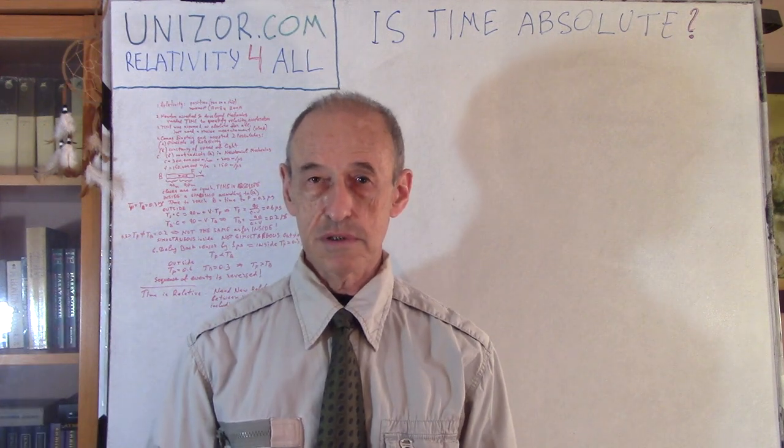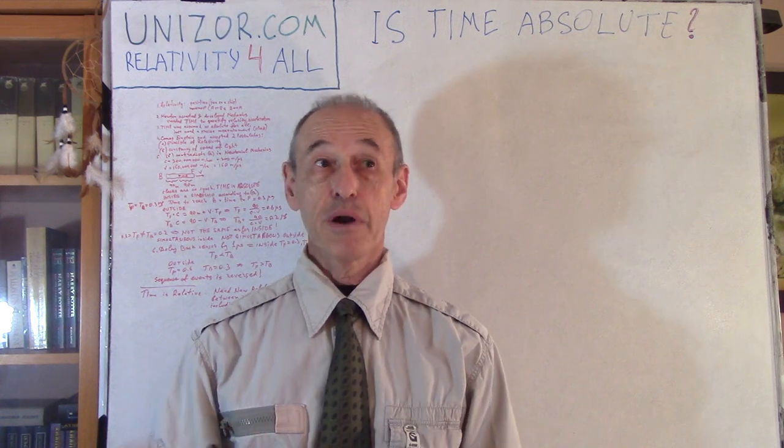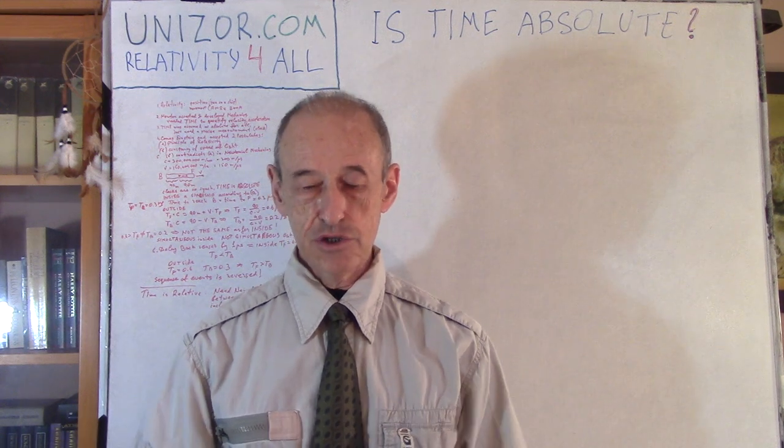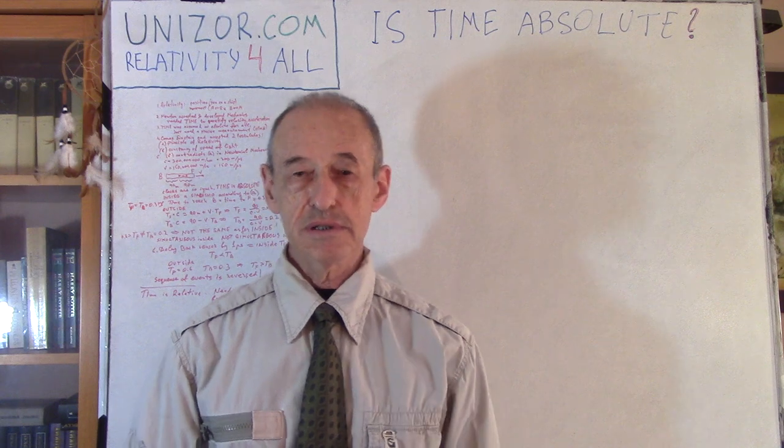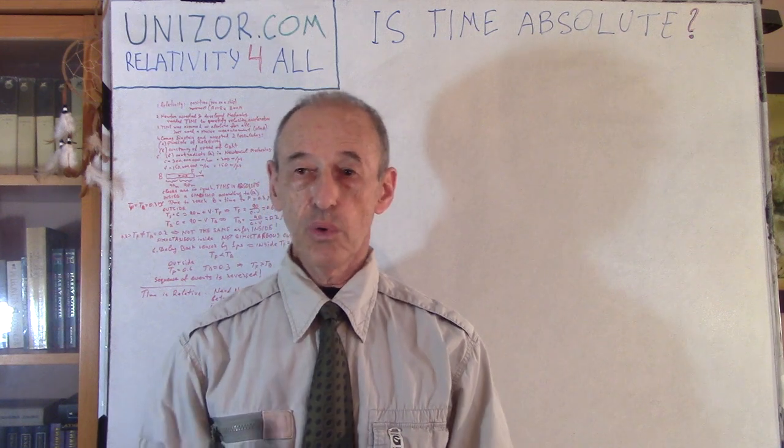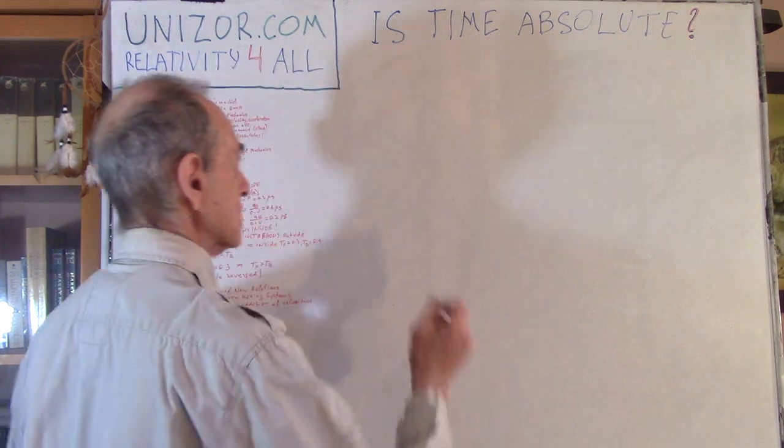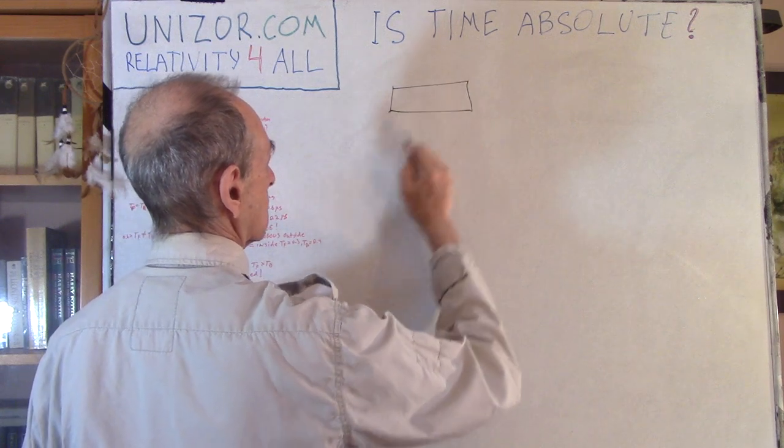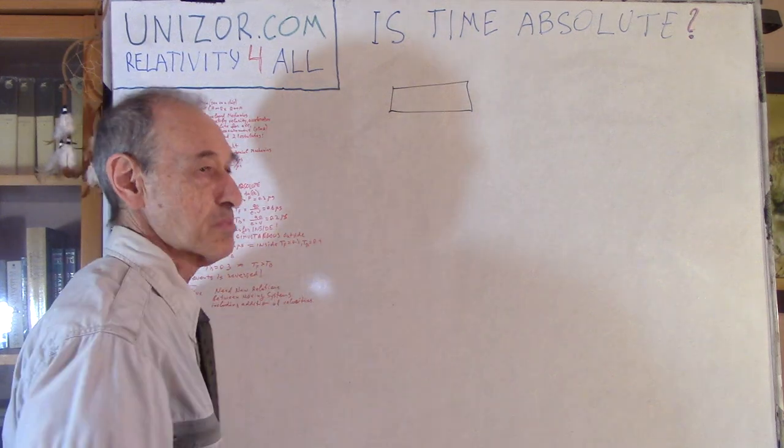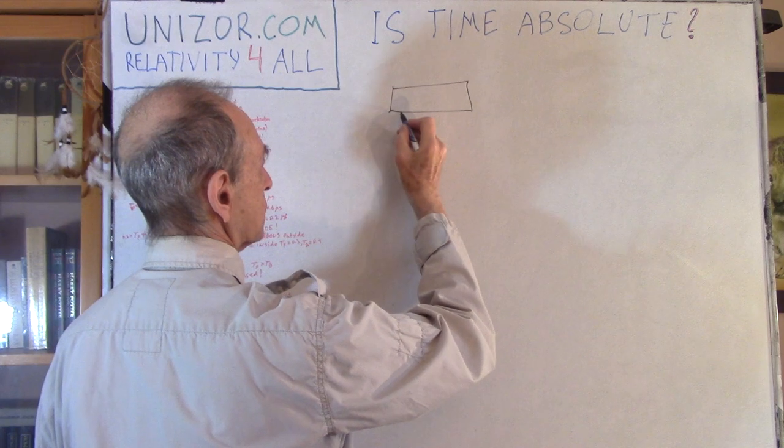Principle of relativity basically states that if you have two reference frames, two systems of coordinates, and one is moving with the same speed, with the same direction relative to another, and they are inertial systems, which means there are no external forces acting on them. There should be no experiment which is conducted inside each of the system that show that this system is moving and this one is standing or vice versa.